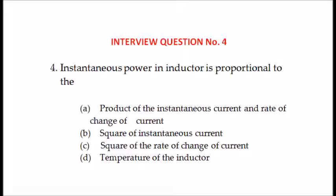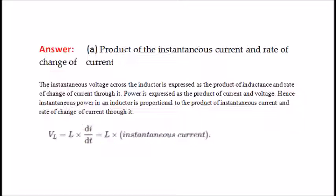Fourth question: instantaneous power in an inductor is proportional to — product of the instantaneous current and the rate of change of current, square of instantaneous current, square of rate of change of current, or temperature of the inductor? The answer is the product of the instantaneous current and the rate of change of current. Because the instantaneous voltage across the inductor is expressed as the product of inductance and rate of change of current. Power is the product of current and voltage, hence instantaneous power in an inductor is proportional to the product of instantaneous current and rate of change of current.